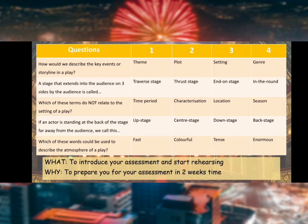And here are the answers. Number 1: how would we describe the key events of a storyline in a play? The answer is number 2, plot. Question 2: a stage that extends into the audience on three sides is called number 2, thrust stage. Question 3: which of these terms does not relate to the setting of a play? The answer is characterisation, which is number 2.